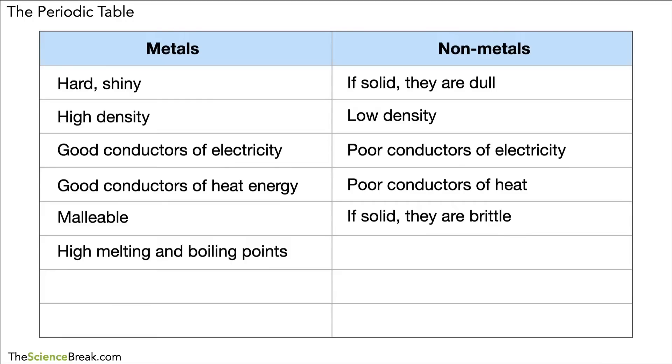Metals have high melting and boiling points. It takes a lot of energy to melt metals, whereas non-metals tend to have lower melting and boiling points. Some of them are actually even gases at room temperature.